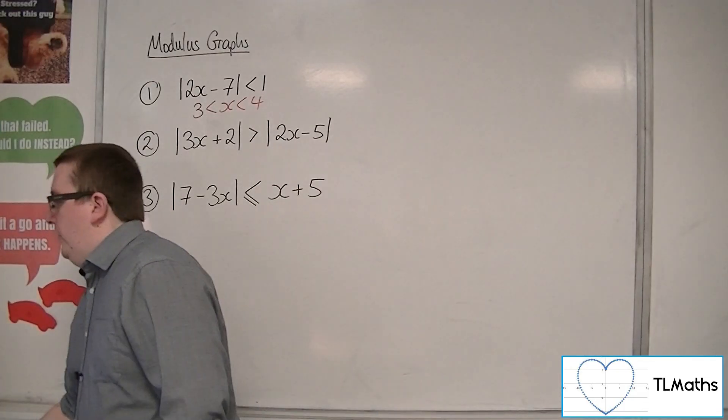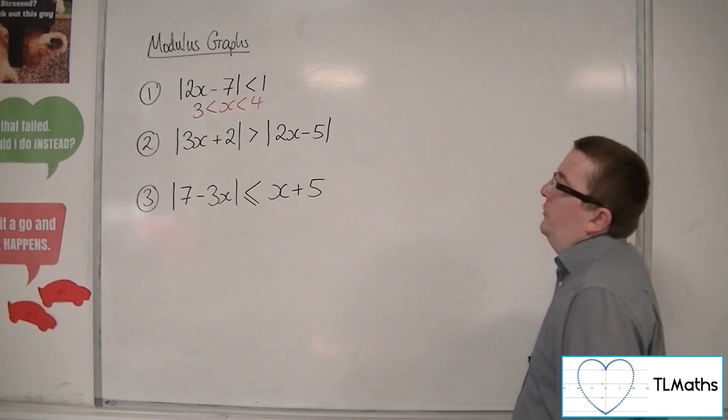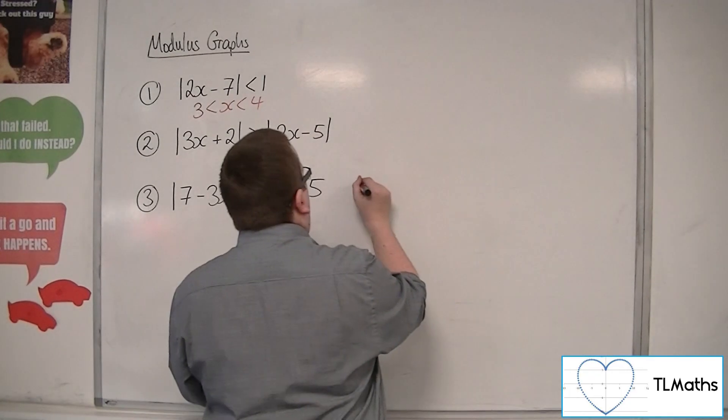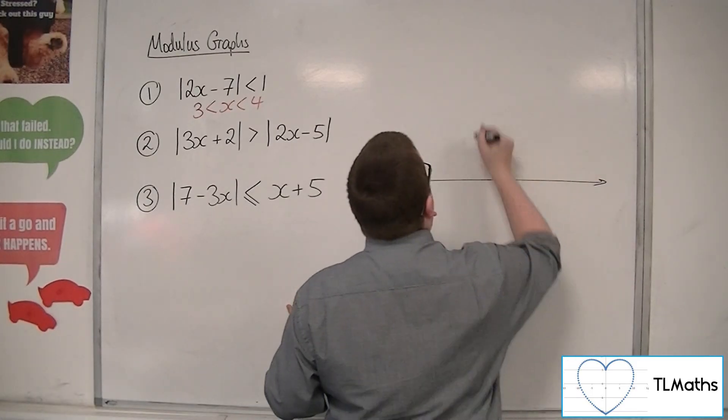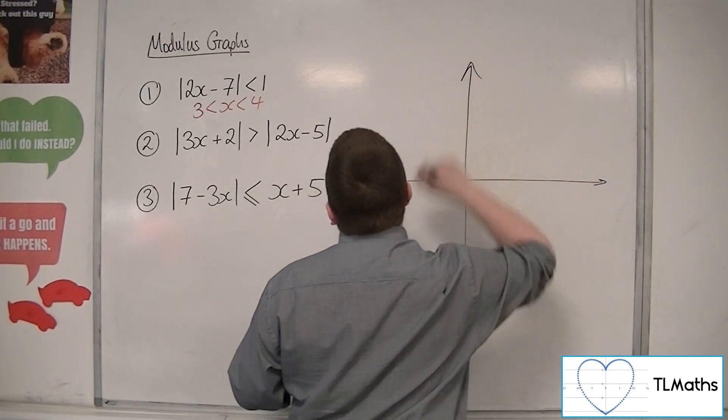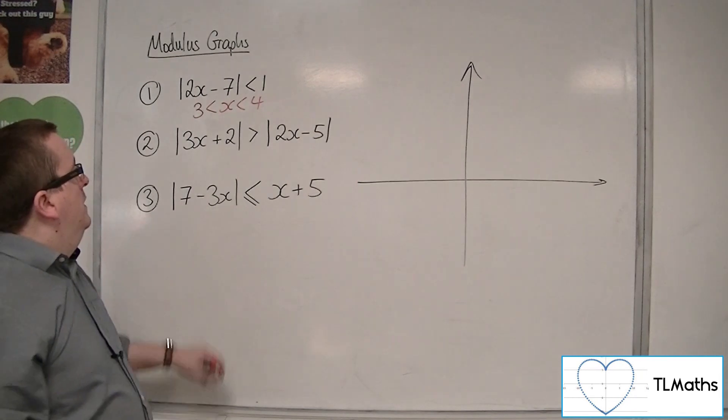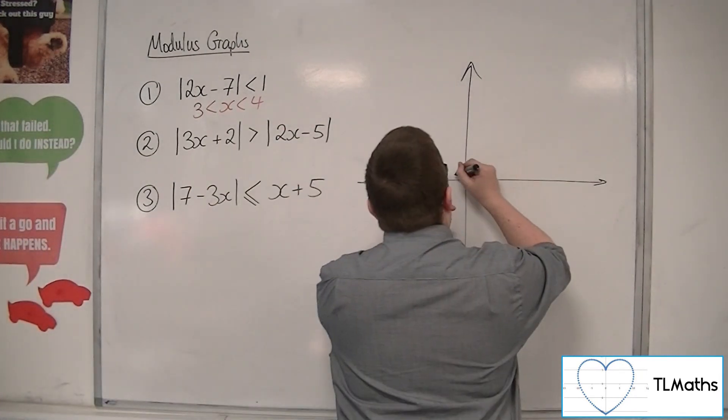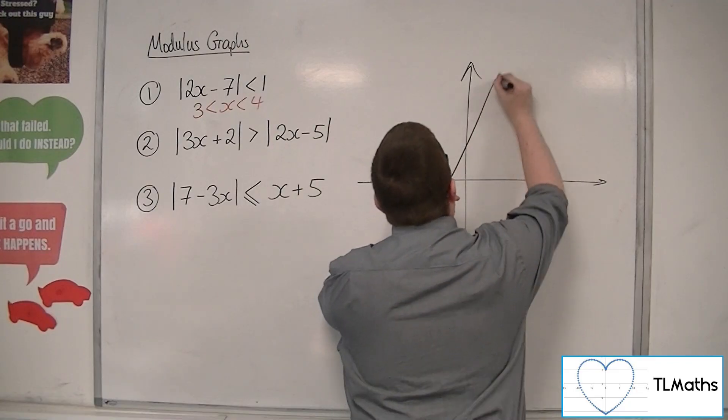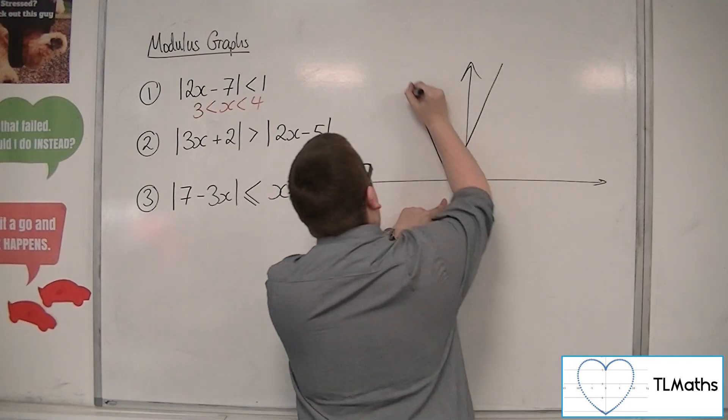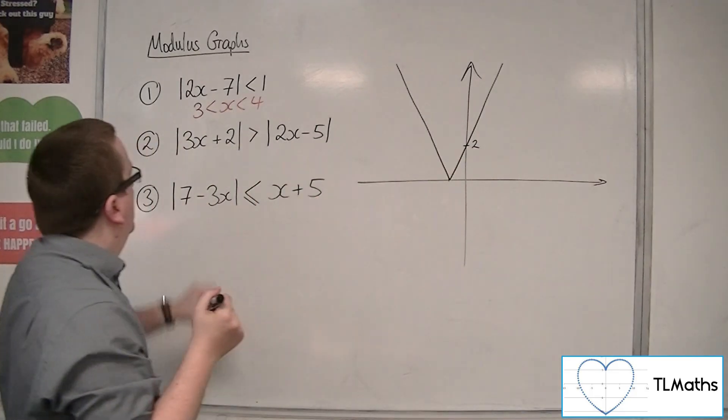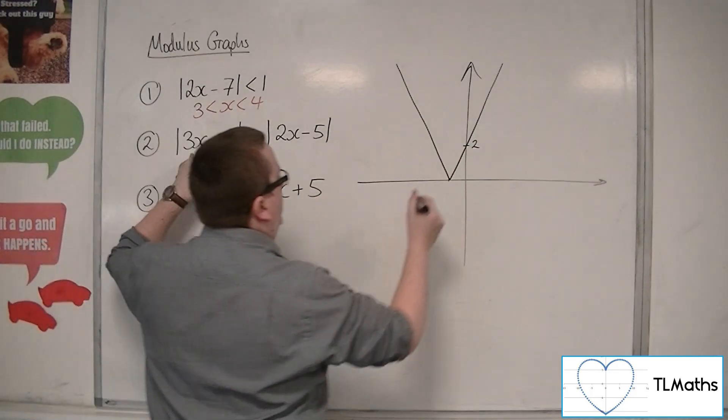So, let's have a look at this second one. 3x plus 2 modded is greater than 2x minus 5 modded. Okay, so in this one, I really want to draw and superimpose both graphs. Okay, so we've got mod of 3x plus 2. So, mod of 3x plus 2 would look something like this. So, there's 2, and this point is at minus 2 thirds.